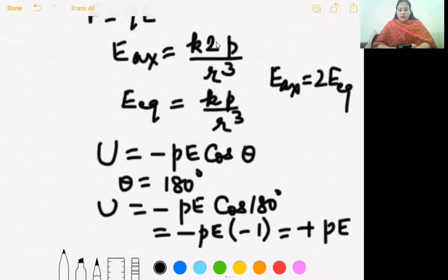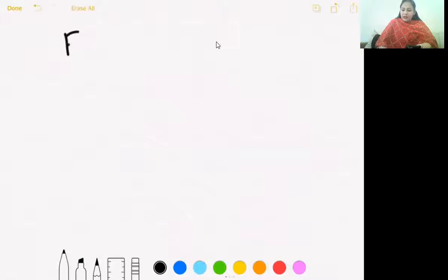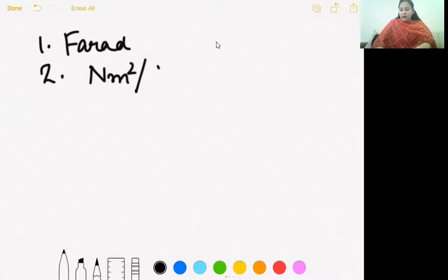First was write the unit of capacitance, that is farad. Second part was electric flux. You could have written newton meter square per coulomb or volt meter also, both answers are correct.